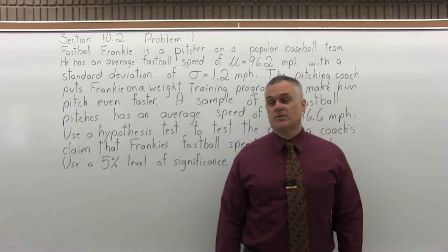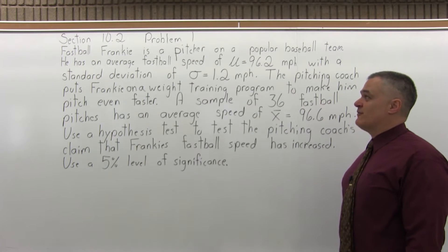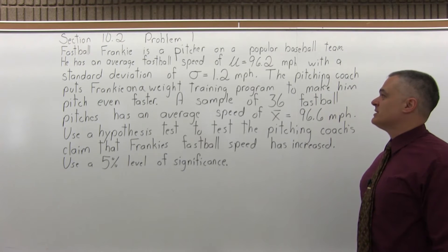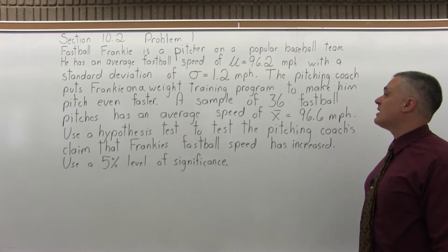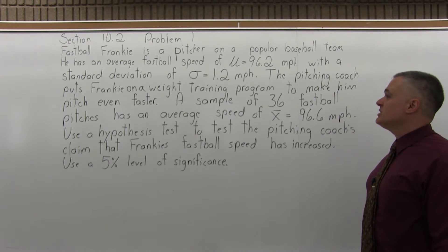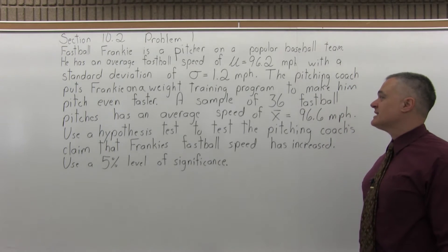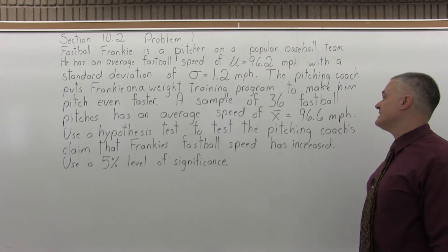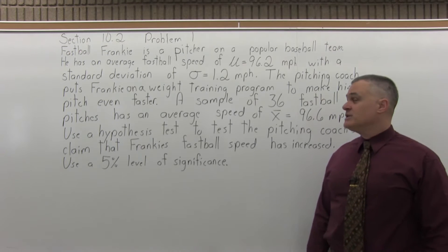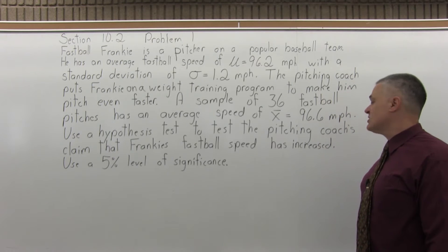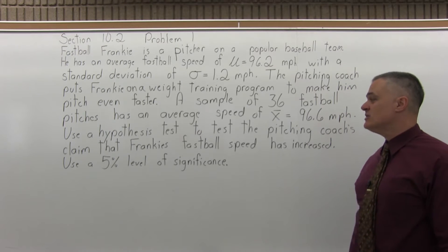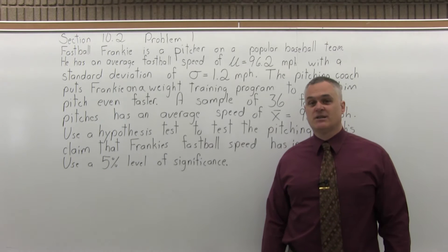This is Section 10.2, Problem number 1. Fastball Frankie is a pitcher on a popular baseball team. He has an average fastball speed of mu equal to 96.2 miles per hour with a standard deviation of sigma equal to 1.2 miles per hour. The pitching coach puts Frankie on a weight training program to make him pitch even faster. A sample of 36 fastball pitches has an average speed of x-bar equal to 96.6 miles per hour. Use a hypothesis test to test the pitching coach's claim that Frankie's fastball speed has increased. Use a 5% level of significance.